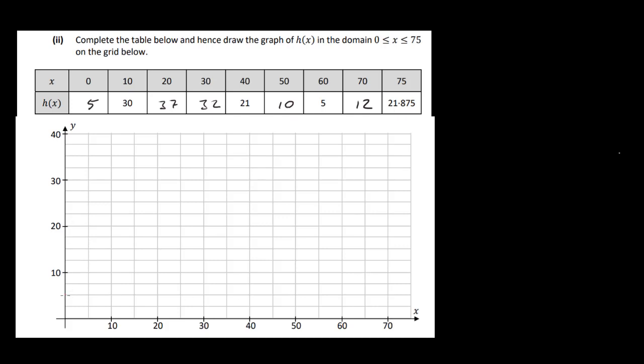So we have 0, 5, so 5 is going to be here. We have 10, which is 30, so 30 is here. We have 20, 37, so 20, 35, 36, 37 is going to be somewhere around there. 30 is 32, so 30 and this is 30 here. This is 35. This is 32 and a half here, so this would be around 32 here. 40 is 21, so 40 up to 21 is going to be somewhere around there. 50 is 10, so 50, 10 here. 60 is 5, so it's going to be here. 70 is 12, so 12 is going to be somewhere around here. And finally, 75 is 21.875, so 75 is here, and we've got to go up to 21.875. Again, it's going to be somewhere around here.